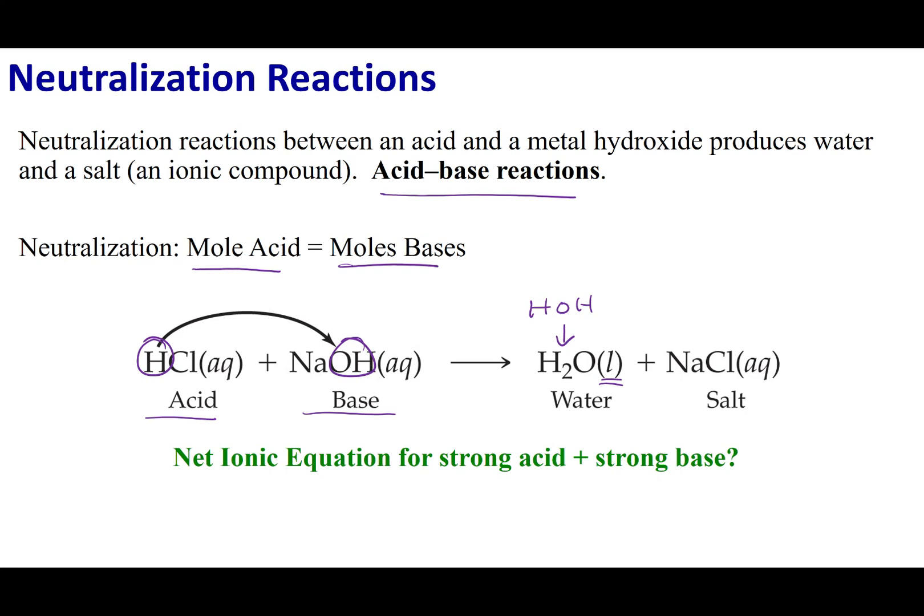The other product that is going to be formed is generally called a salt. And that is an ionic compound. So in this case, the Na is going to combine with the Cl. Now, for Chem 1a, we are going to stick with strong acids and strong bases combining. Later in Chem 1b, you'll talk about weak acids and weak bases. But for now, don't worry about that.